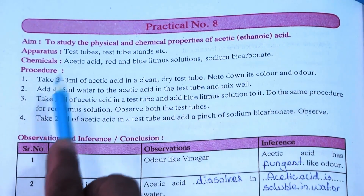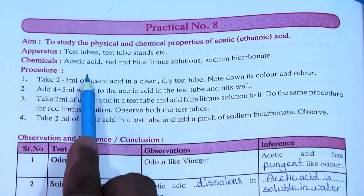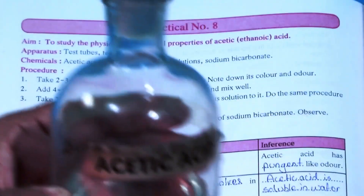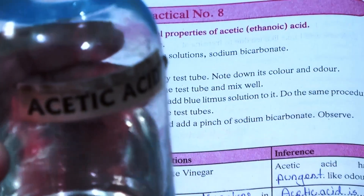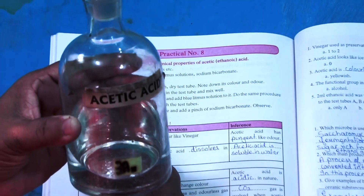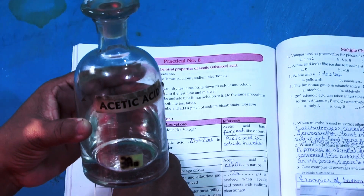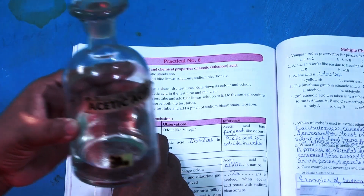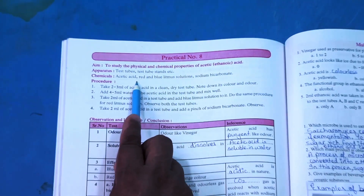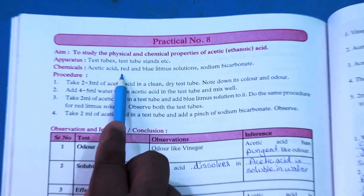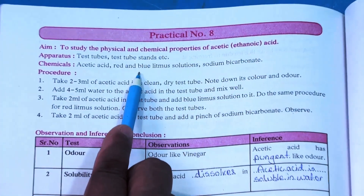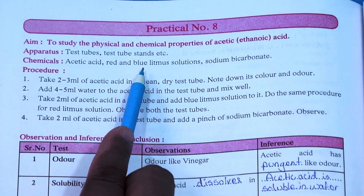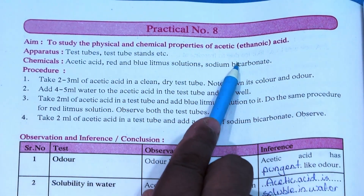The chemical we will be using here is acetic acid. I will be showing you all the materials together — red litmus, blue litmus, and sodium bicarbonate solution.